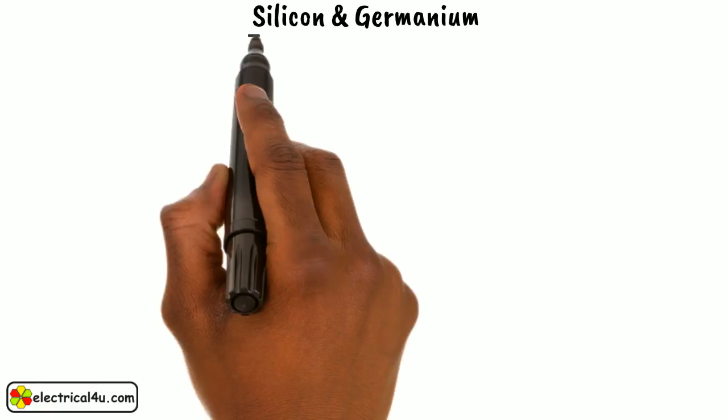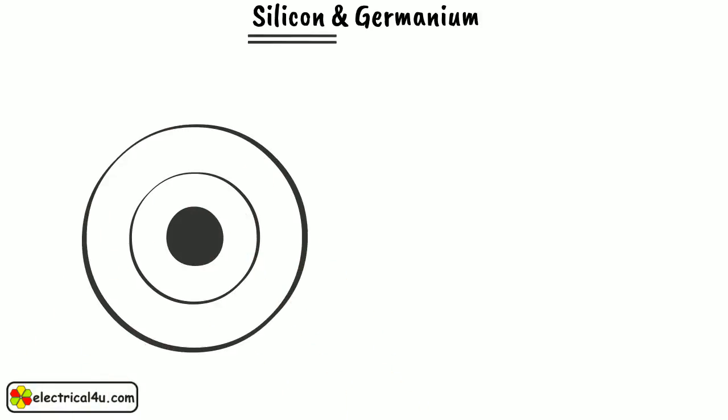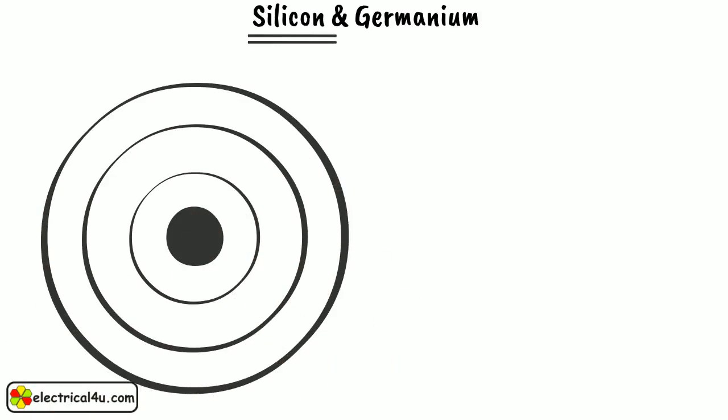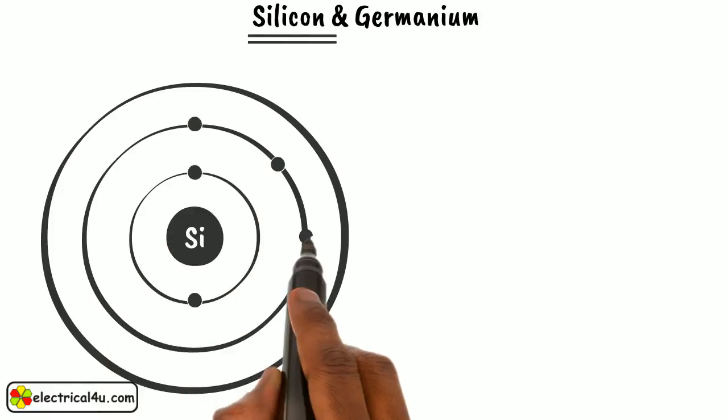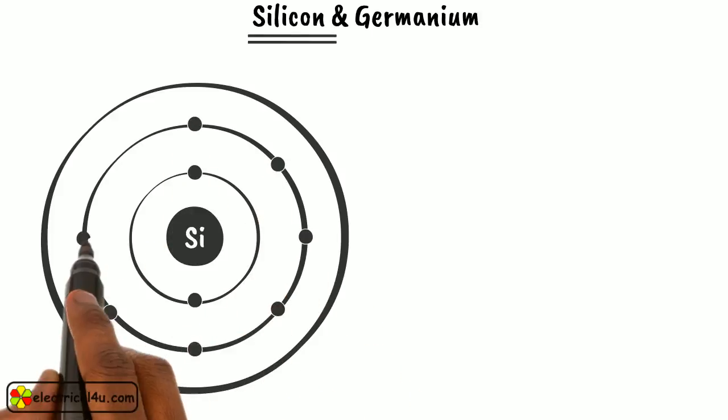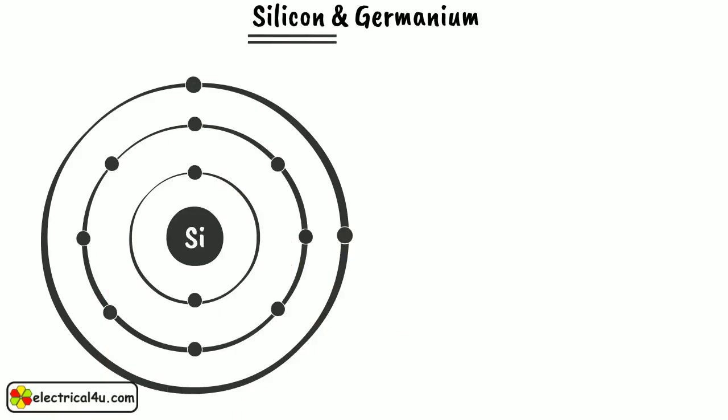Let us consider the atoms of a semiconducting material, silicon. Silicon has 14 electrons orbiting in 3 orbits, and they are distributed as 2, 8, and 4. This means 2 electrons are in the innermost orbit, 8 electrons are in the next to innermost orbit, and 4 are in the outermost orbit.